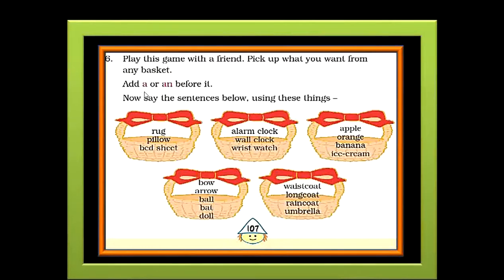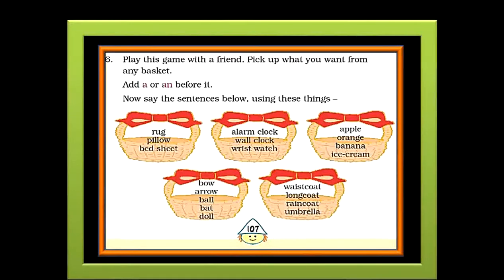Now the question is when to add A and when to add an. For the words that begin with a consonant sound, we add A. And for those words that begin with a vowel sound, we add an. So let's start adding A or an before these words. A rug, a pillow, a bed sheet — these three words begin with a consonant sound, that is why we have added A in front of them. An alarm clock, a wall clock, a wrist watch — here the first word begins with a vowel, and that is the reason why we have added an.